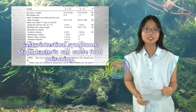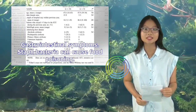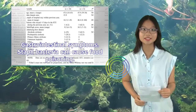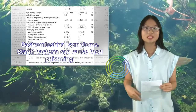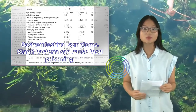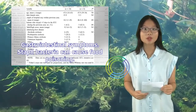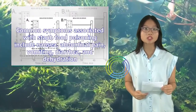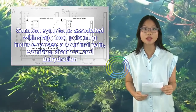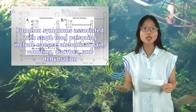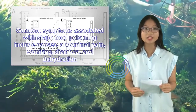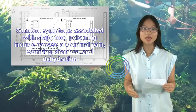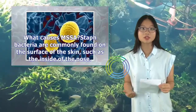Gastrointestinal symptoms: staph bacteria can cause food poisoning. Common symptoms associated with staph food poisoning include nausea, abdominal pain, vomiting, diarrhea, and dehydration.